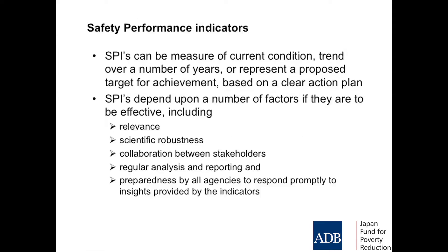So you can measure current condition, you can measure trend over a number of years, or SPIs could represent a target for performance. You could say our target is to get a mean speed of 55 kilometres an hour in three years' time, or we want to get the number of fatalities involving drink driving as a cause down from 20% to 10% within five years. They depend upon a number of factors: relevance, scientific robustness, collaboration, and regular analysis and reporting.